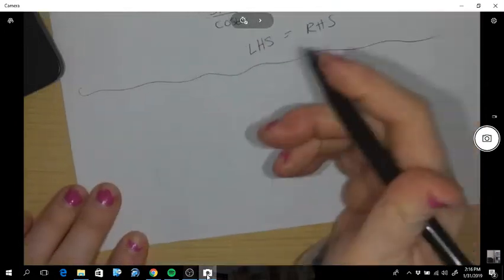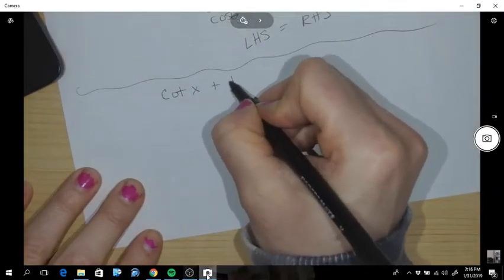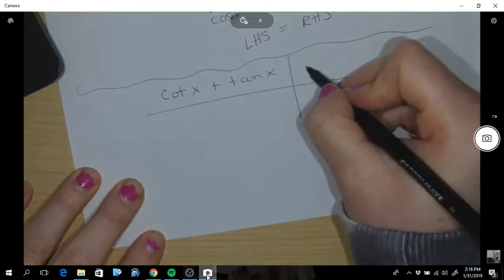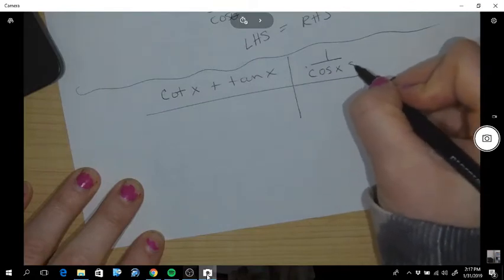Okay, let's try another one. Cotangent x plus tan x. Prove that it is the same as one over cos x sine x.